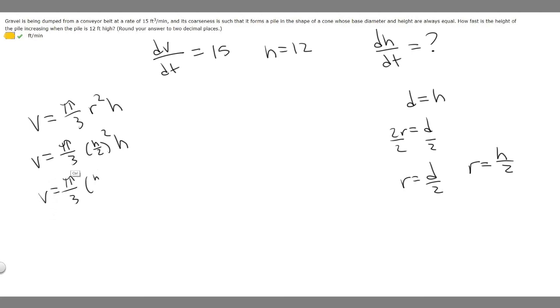What this simplifies to is V = π/12 times h² times h. We can add the exponents together, so this becomes h³. This will be our new formula. Now we can differentiate both sides, then plug in our values and solve.